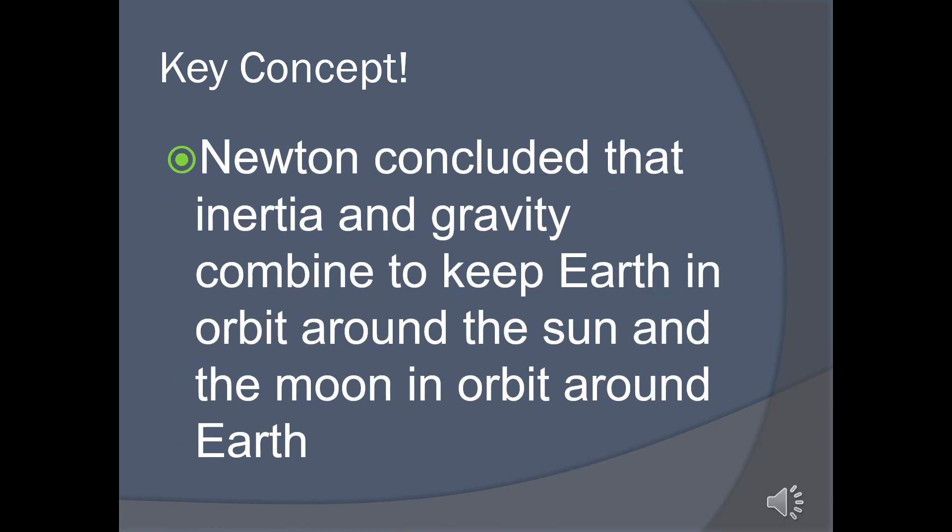We do have some music, but I'll play it momentarily. Newton concluded that inertia and gravity combine to keep Earth in orbit around the sun and the moon in orbit around the Earth. Earth is moving in a constant path around the sun, and the gravity and inertia kind of balance each other out. The inertia keeps it moving around the sun.